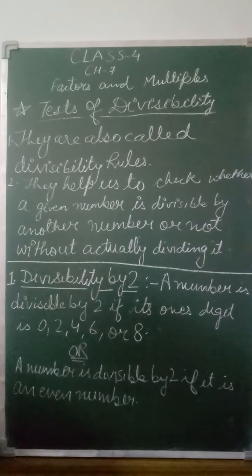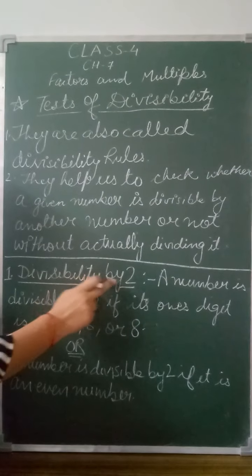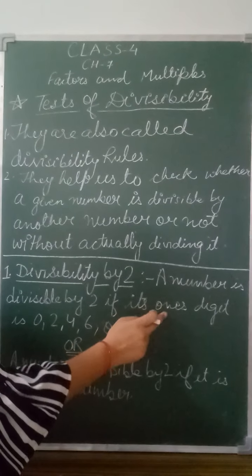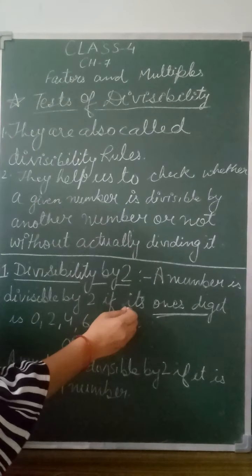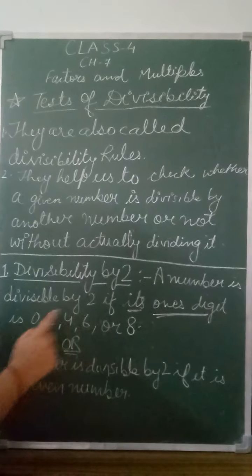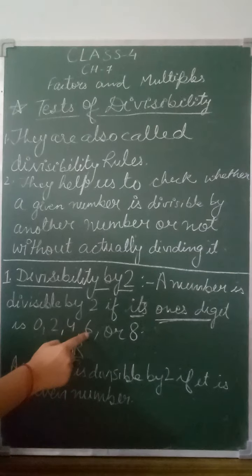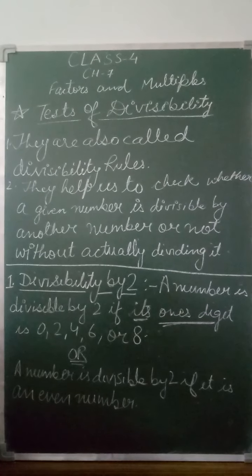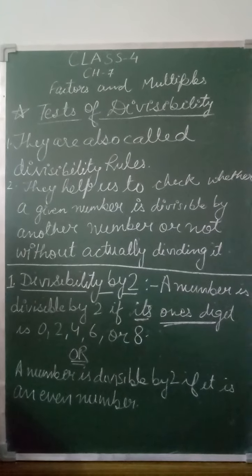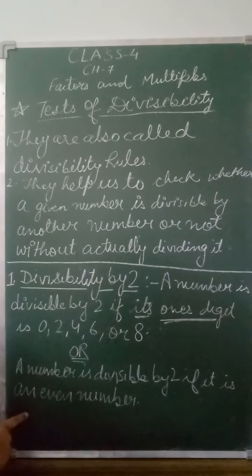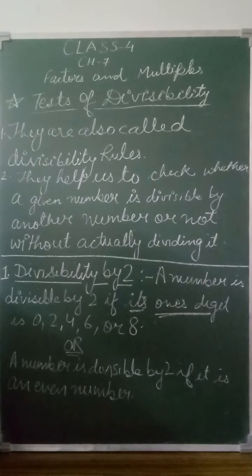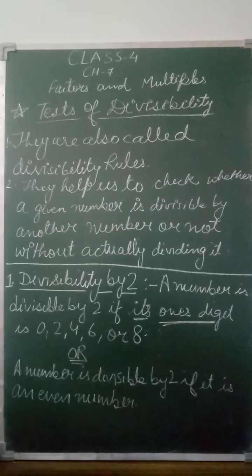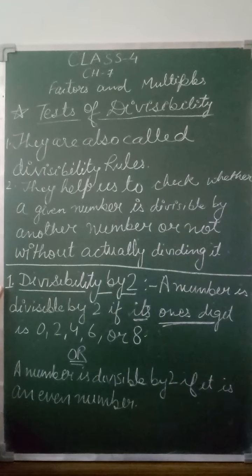The first divisibility rule is divisibility by two. A number is divisible by two if its ones digit is 0, 2, 4, 6, or 8 — that is, if the number ends on an even digit. In other words, a number is divisible by two if it is an even number.